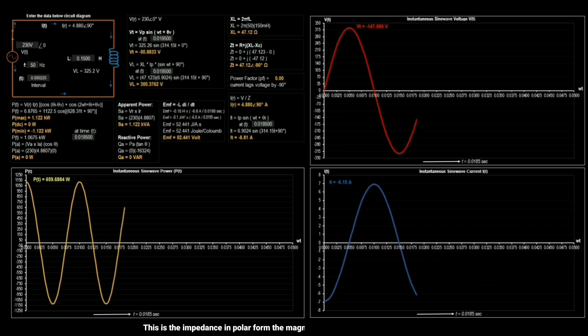This is the impedance in polar form, the magnitude is 47.12 ohm and phase angle of minus 90 degrees.